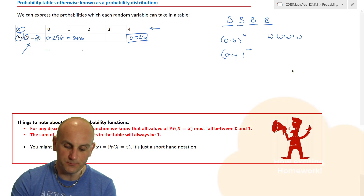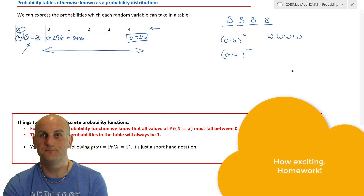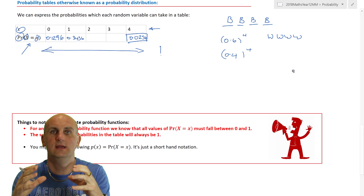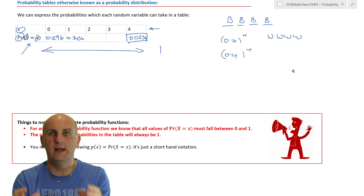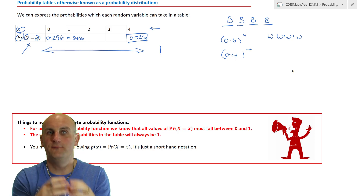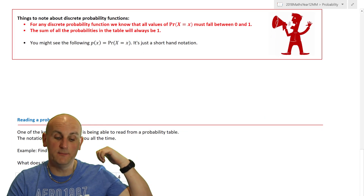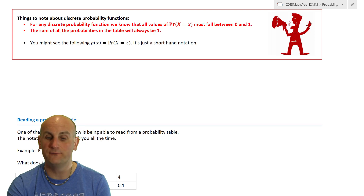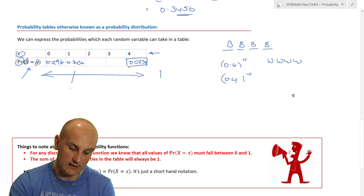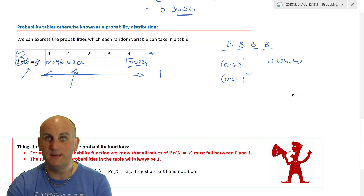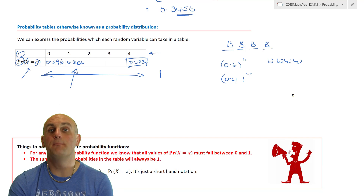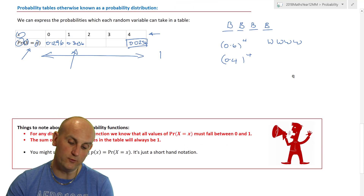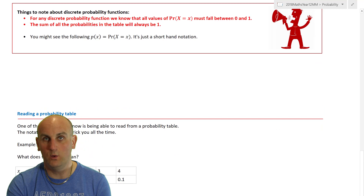Hopefully you'll say one — because that table covers all possible outcomes: all the possible ways of getting a white ball across four choices. And the key properties of discrete probability functions are: all values must fall between zero and one — a probability cannot be negative — and the sum of all probabilities in the table will always equal one. Watch out: some exam questions actually put negatives in to trick you.